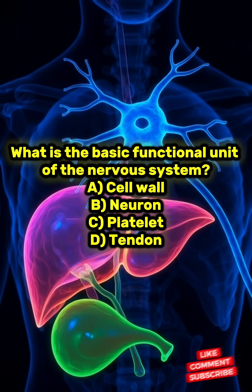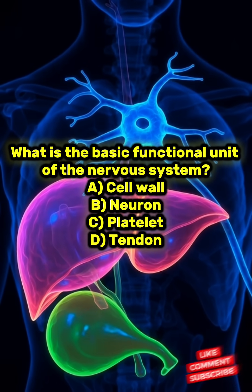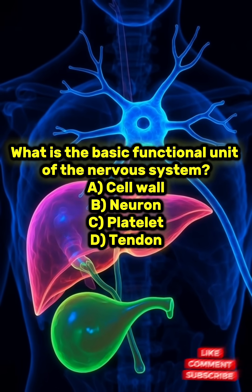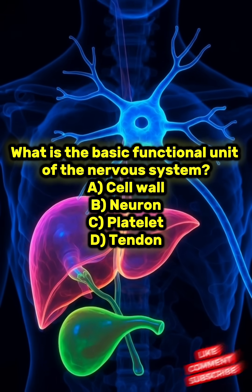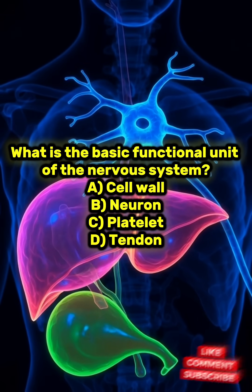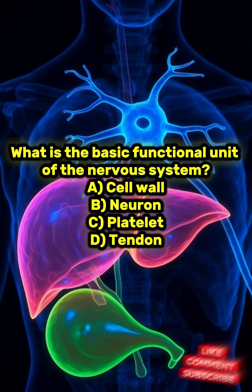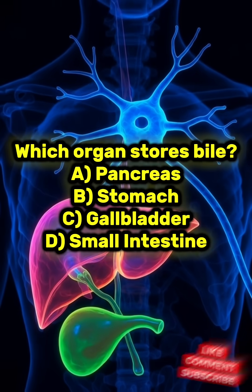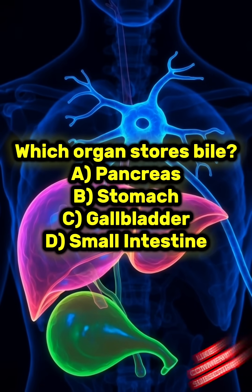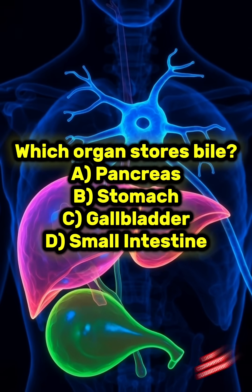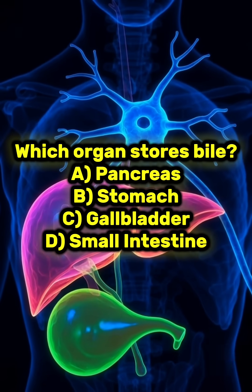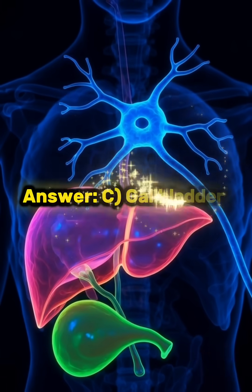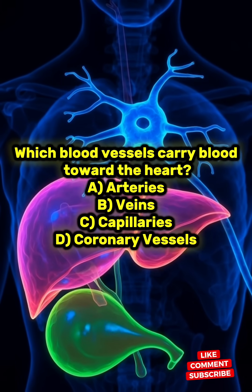What is the basic functional unit of the nervous system? A) Cell wall, B) Neuron, C) Platelet, D) Tendon. Answer: B) Neuron. Which organ stores bile? A) Pancreas, B) Stomach, C) Gallbladder, D) Small intestine. Answer: C) Gallbladder.